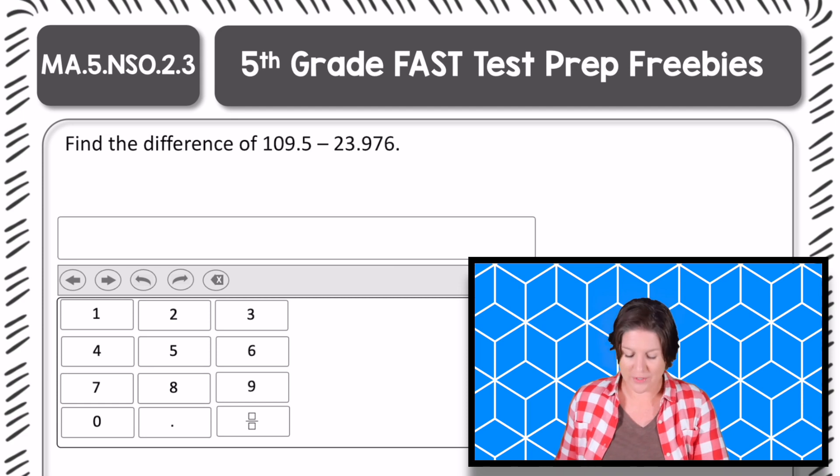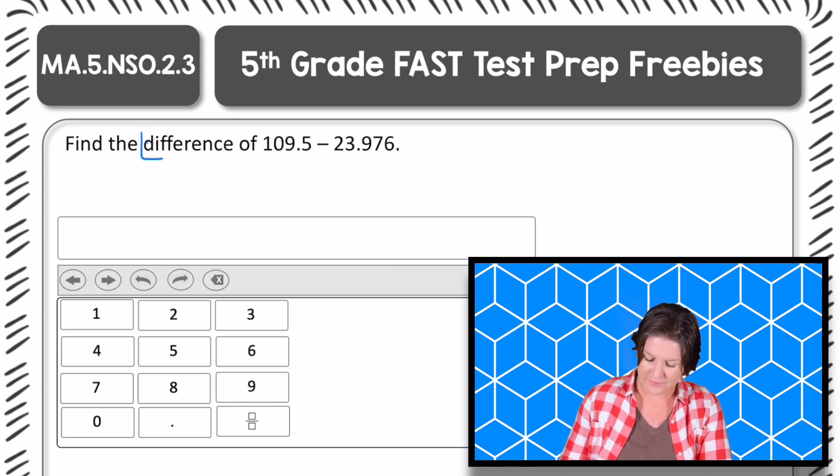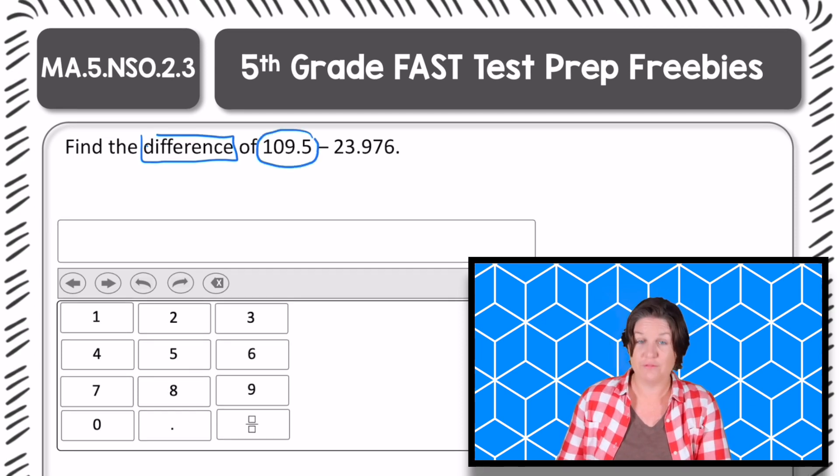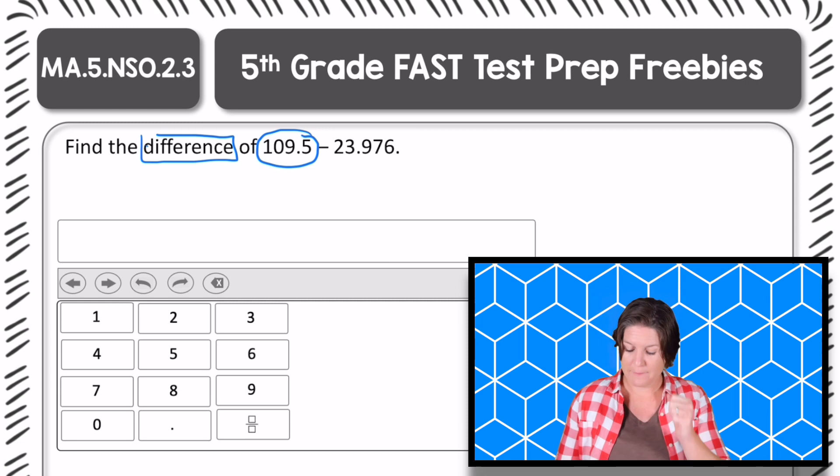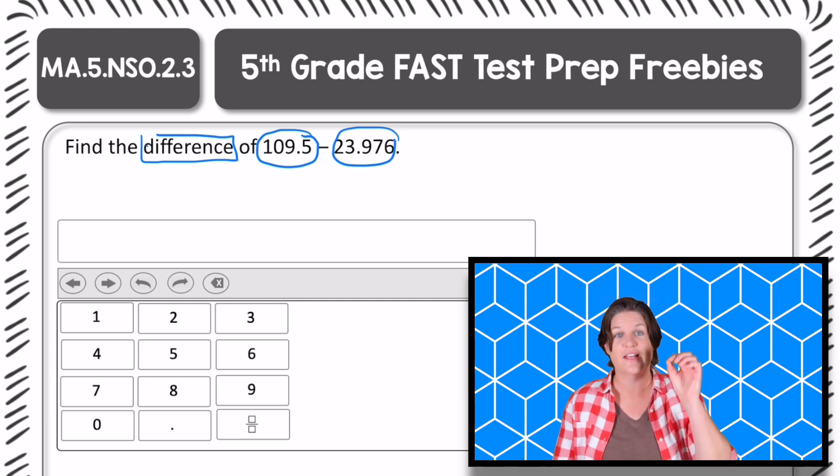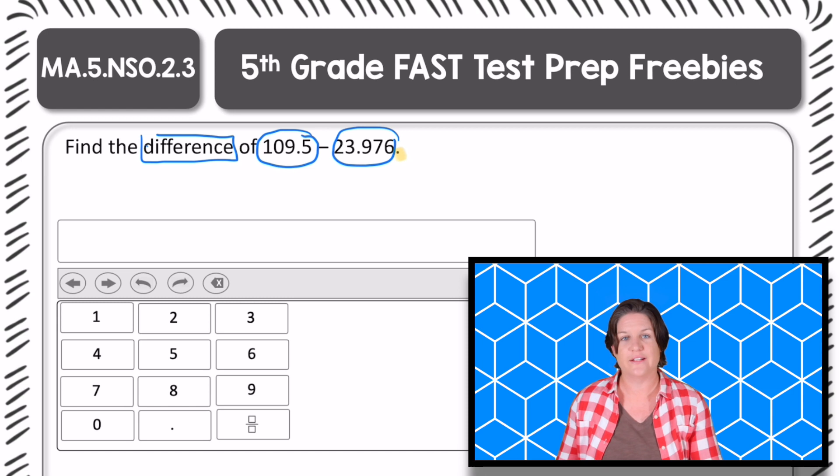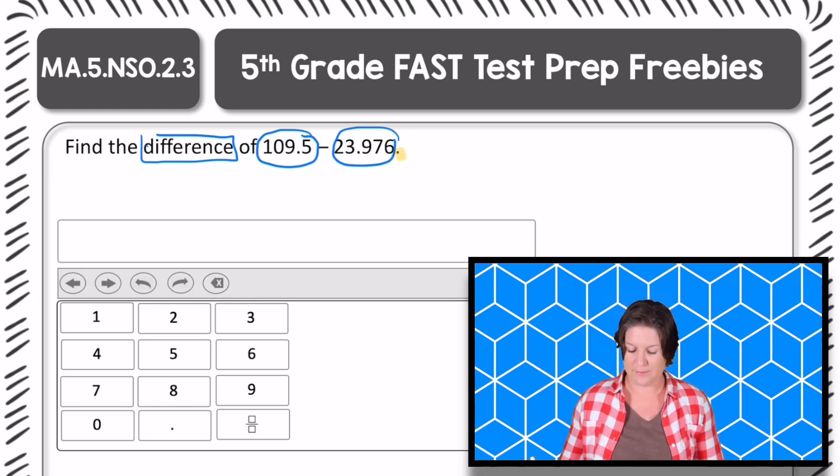Alright fifth grade, welcome back. Let's go ahead and tackle this one. So it says to find the difference of 109.5 minus 23.976. Now you might be saying, what's this other decimal right there? It's not really a decimal at the end there, it is just a period to close out the statement. So we need to go ahead and find the difference.